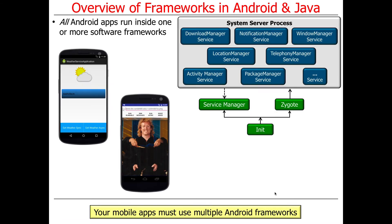Every Android app you'll ever write runs inside of one or more frameworks. There's no way around that — your apps must use many different frameworks. If you get into more advanced forms of Android, you'll see lots and lots of other frameworks: a framework to manage the windowing system, framework to handle location services, framework to deal with the telephone and radio, framework to handle downloading new apps from the Play Store, framework for notifying in your notification status bar when things have happened in the background, and frameworks to manage the life cycle of activities and services, and so on. Lots of frameworks are all working together to provide you Android.